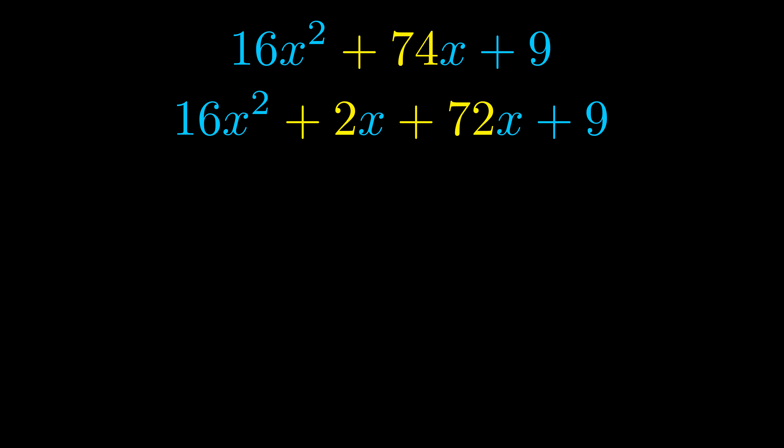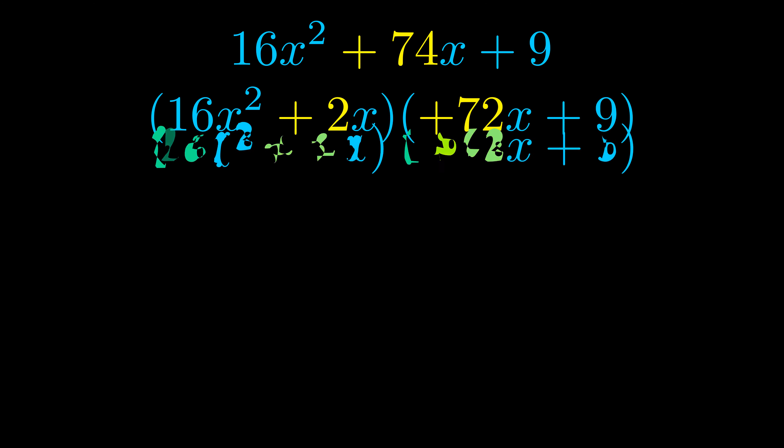Once we've done this we go ahead and we put parentheses around the first term and the last term. And we do that so that we can take the greatest common factor out of both terms. We can see the greatest common factor is now outside in green. Notice also how what remains inside of the parentheses is the same in both cases. The blue values are the same.